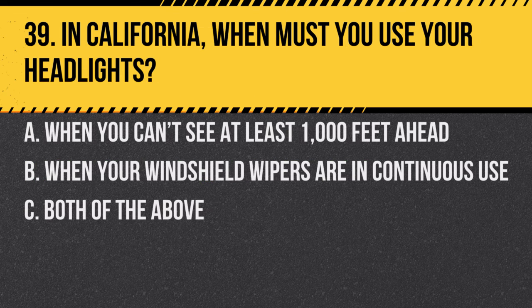Question 39. In California, when must you use your headlights? a. When you can't see at least 1,000 feet ahead. b. When your windshield wipers are in continuous use. c. Both of the above. Answer: c. Both of the above. These conditions require the use of headlights for visibility and safety.